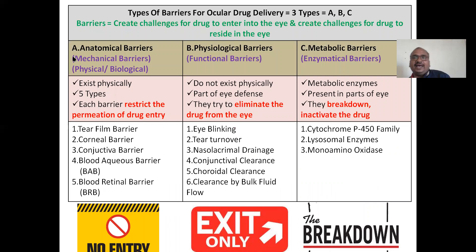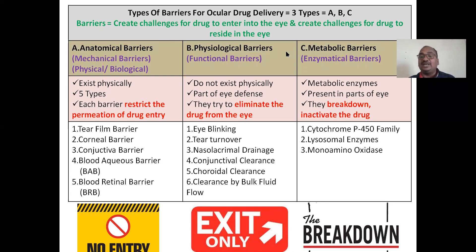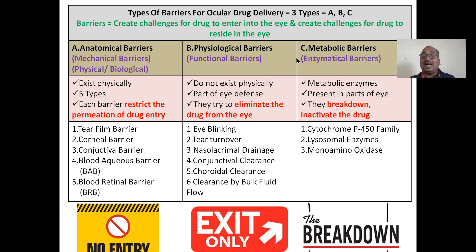There are a number of barriers, and all these barriers create a struggle — each one making it difficult for the drug to enter into the eye and reach the interior part. There are nearly 20 types of barriers, but broadly we classify them into three categories: Type A — anatomical barriers, Type B — physiological barriers, and Type C — metabolic barriers. All are very important.